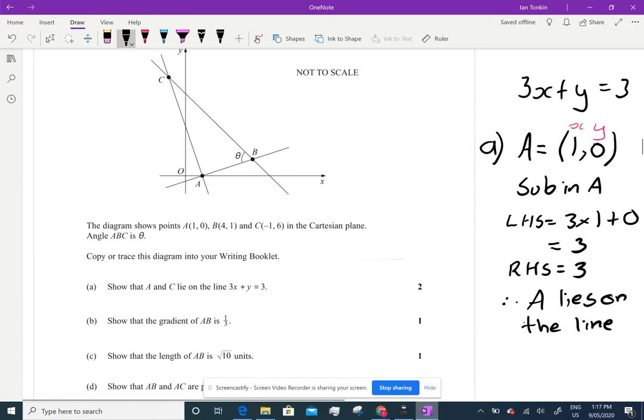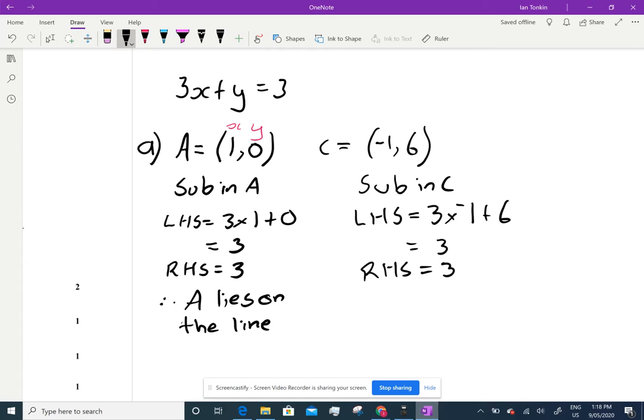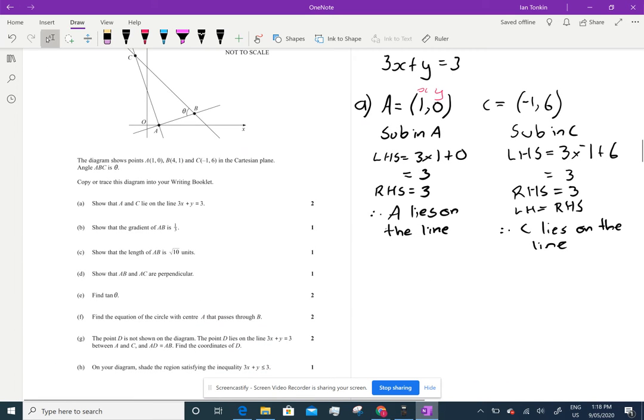That's how you show whether or not a point lies on the line. Let's try C. C are the coordinates negative 1 and 6. And we're just going to do exactly the same thing, except this time we're going to sub in C. And we get the left-hand side equals 3 times the x value, negative 1, plus the y value, 6. 3 times negative 1 is negative 3, plus 6 is 3. The right-hand side equals 3. So the left-hand side equals the right-hand side. Therefore, C lies on the line. So, that's how you should go about doing a show.